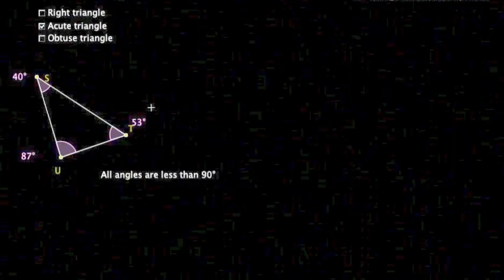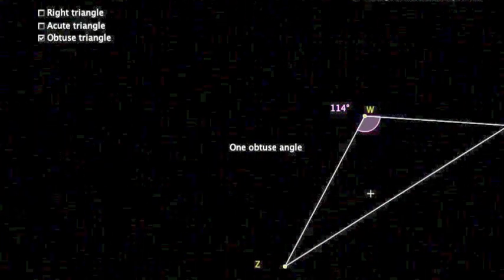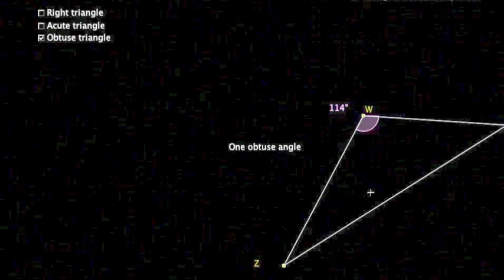Now there are three types of triangles based on angles. We have our right triangle, and that's a triangle with one right angle. We have our acute triangle, and that's when all angles are less than 90 degrees. And lastly, the obtuse triangle, and that's a triangle with one obtuse angle.